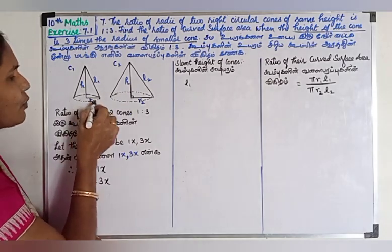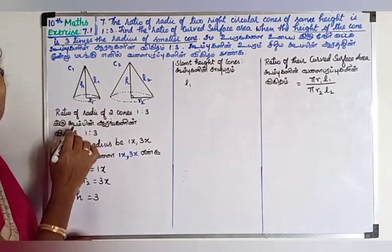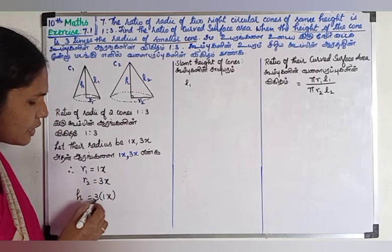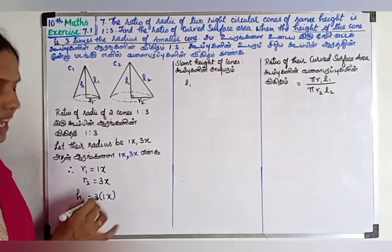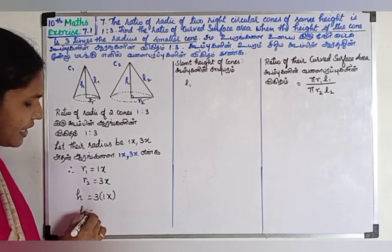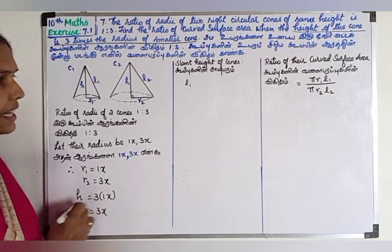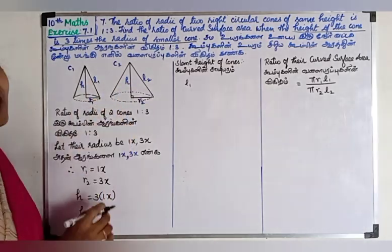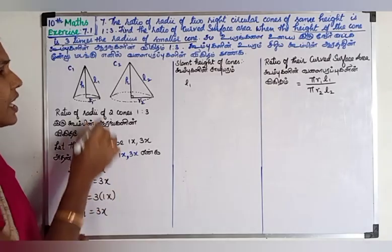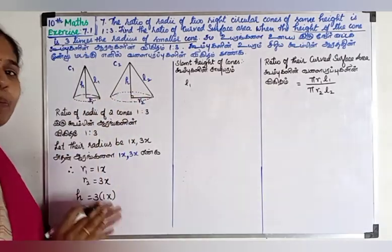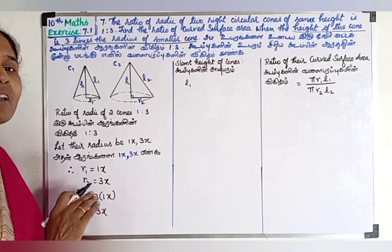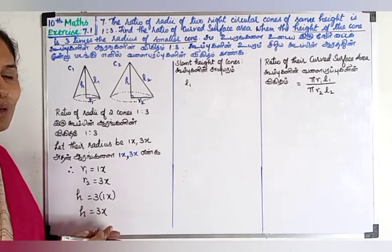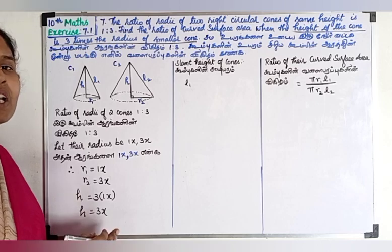If the smaller cone has radius x, then r1 = x and r2 = 3x. The height is equal to 3 times the smaller radius, so h = 3x. Both cones have the same height 3x. Now we need to find the curved surface area ratio of the 2 cones.